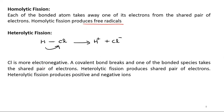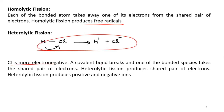We're going to discuss what free radicals are. Heterolytic fission — you can see over here at C-N — Cl is more electronegative. A covalent bond breaks and one of the bonded species takes the shared pair of electrons, and heterolytic fission produces positive and negative ions.